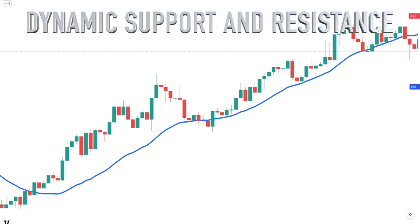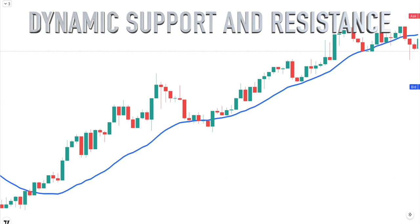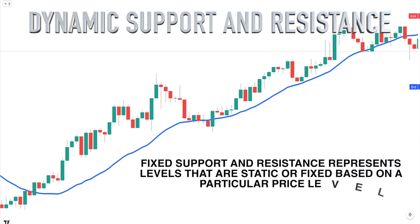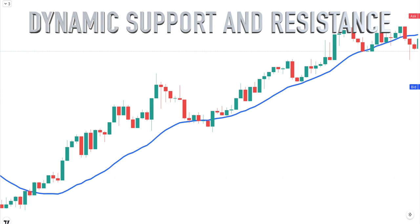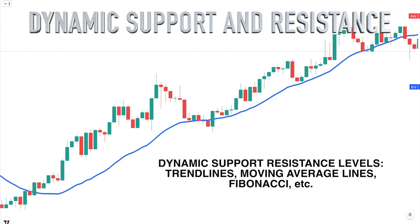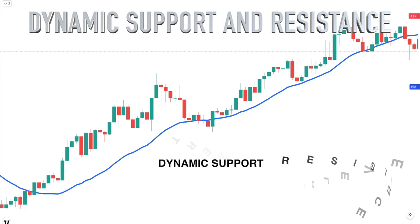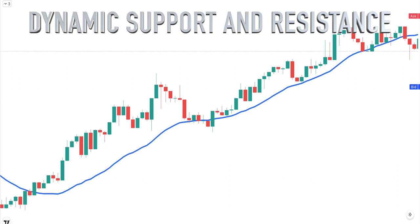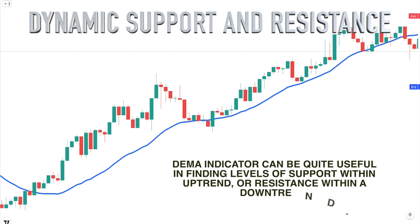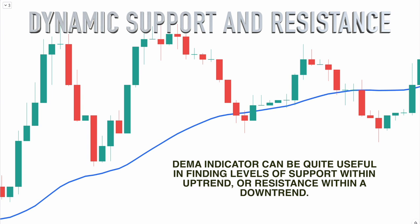Dynamic Support and Resistance Analysis: There are many types of support and resistance levels in the market. The two primary classes include fixed support and resistance — which represents static levels based on a particular price, such as horizontal price levels — and dynamic support and resistance, which includes trend lines, moving average lines, and more. These dynamic levels can change with each new bar that prints on the price chart. The DEMA indicator, as a type of moving average, is considered a dynamic support and resistance indicator useful for finding levels of support within uptrends or resistance within downtrends.